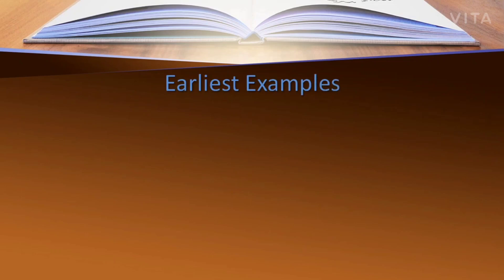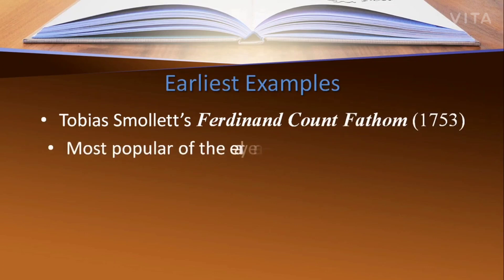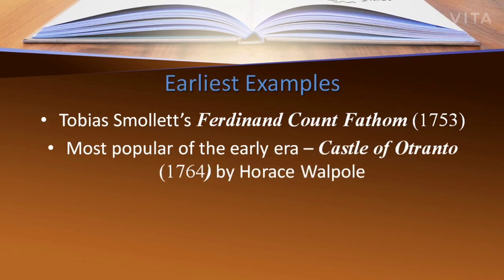The earliest examples of gothic novels are Tobias Smollett's Ferdinand Count Fathom and Horace Walpole's Castle of Otranto. Tobias Smollett's Ferdinand Count Fathom, published in 1753, is probably the first of its kind in gothic. Horace Walpole's The Castle of Otranto is regarded as the most popular gothic novel of the early era.